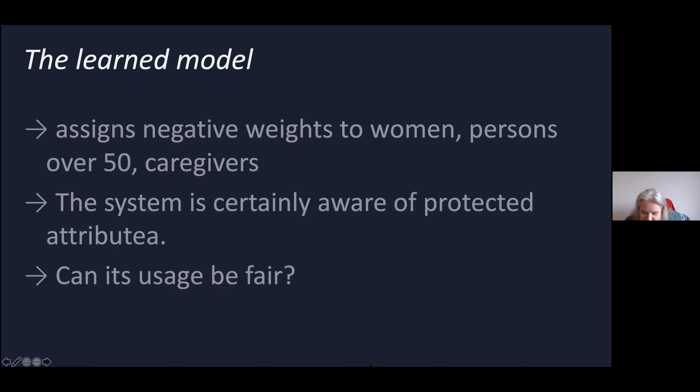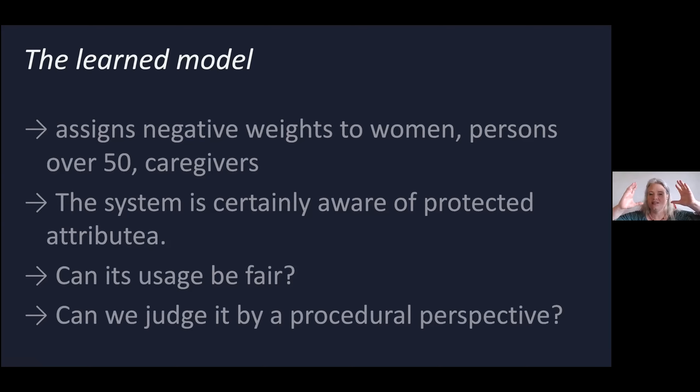What we see is that the system is certainly aware of protected attributes, and people were really angry about it because they thought the system is biased. So can its usage be fair? What is your opinion? On the reactions button in Zoom below, you can give me a yes or no whether you think such a discriminating system's usage can be fair or not. We cannot judge the system by itself. We need to understand the whole procedure to make an assessment of whether its usage actually leads to a better situation or not.